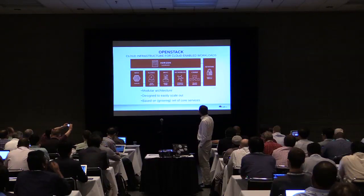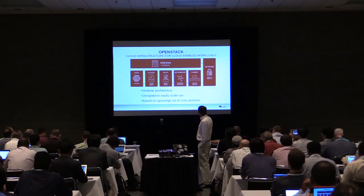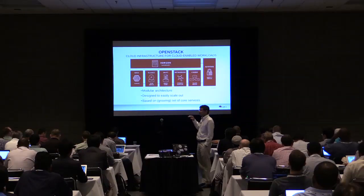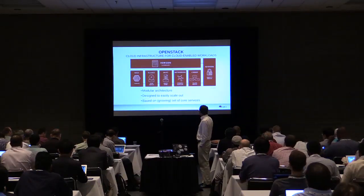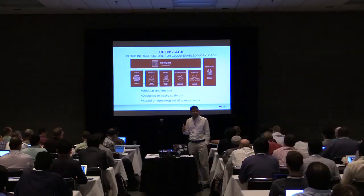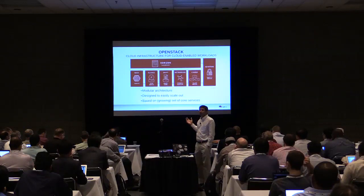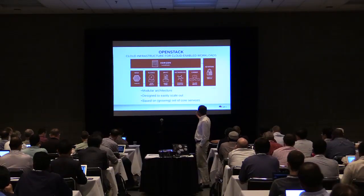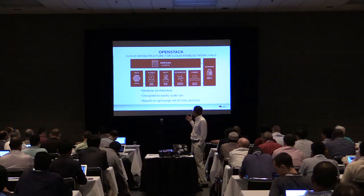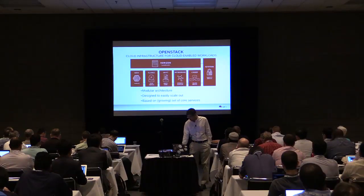At a very high level: Horizon is the dashboard which allows self-service. You have core services below that, starting with Nova, which is your compute service — that's where you get your virtual instances. Then you have three storage services: Glance, which is the image service where you store your ISOs and OS images to boot guests from; Cinder, the volume service, which allows you to think about virtual block devices; and Swift for object storage. To tie them together, you have Neutron for networking, and on the right you have Keystone, the identity service. That's a quick 30-second tutorial on OpenStack.